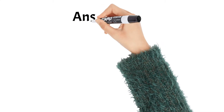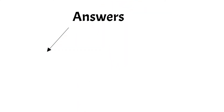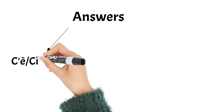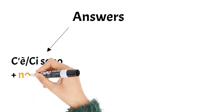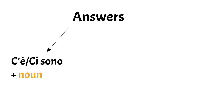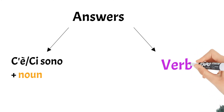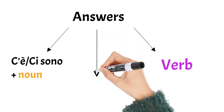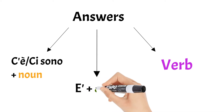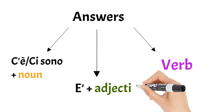Let's now learn the proper and most detailed answers — to say that it is sunny, it is rainy, it is windy, etc. There are three structures for the answer. First: c'è / ci sono followed by a noun, meaning 'there is / there are' plus noun — for example, there is sun, there is rain. Second: a verb, for example, to snow or to rain. Third: è plus an adjective — for example, it is sunny, it is rainy.